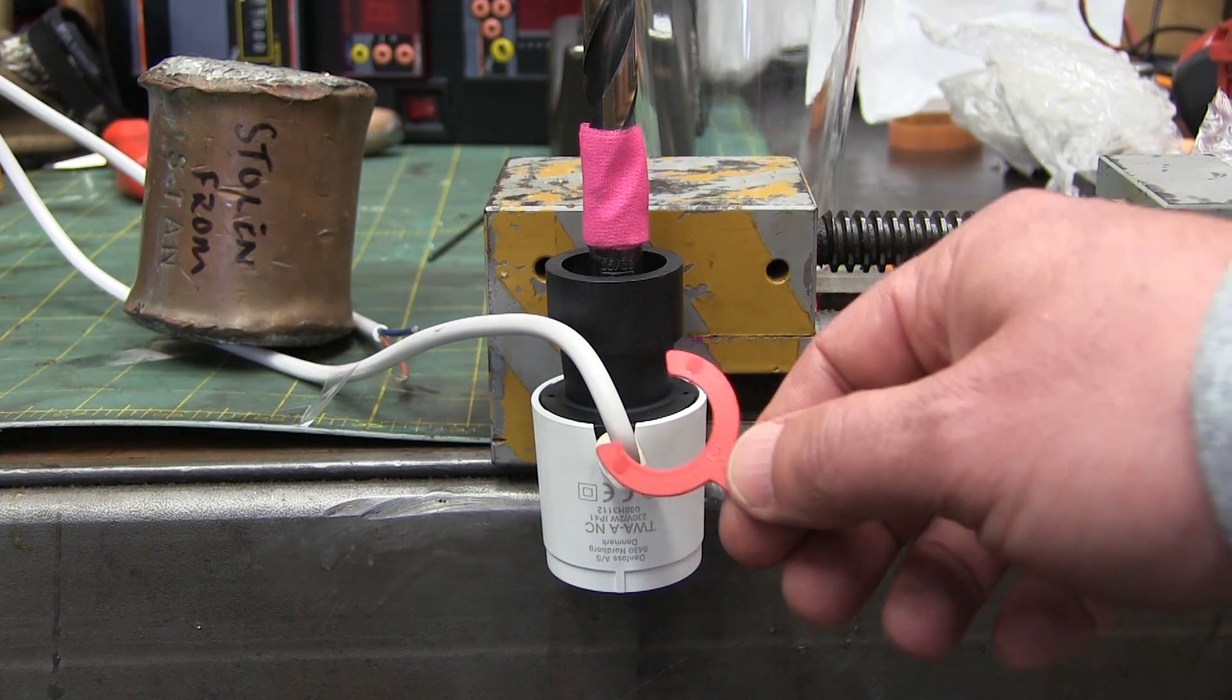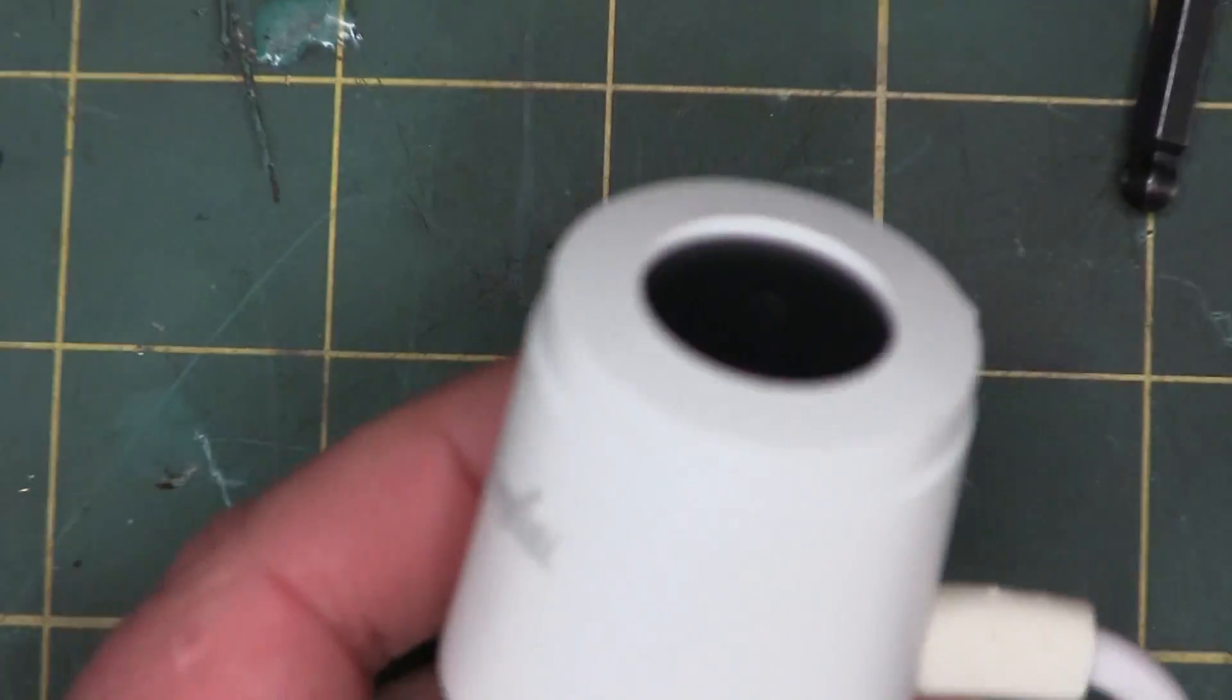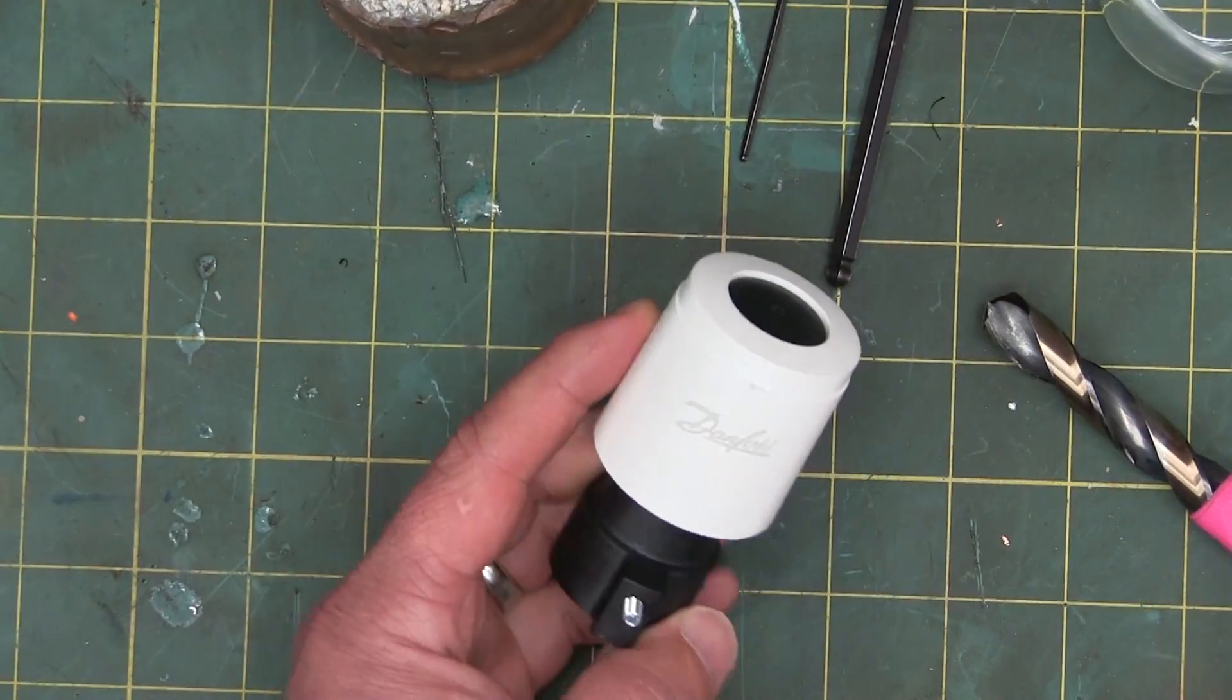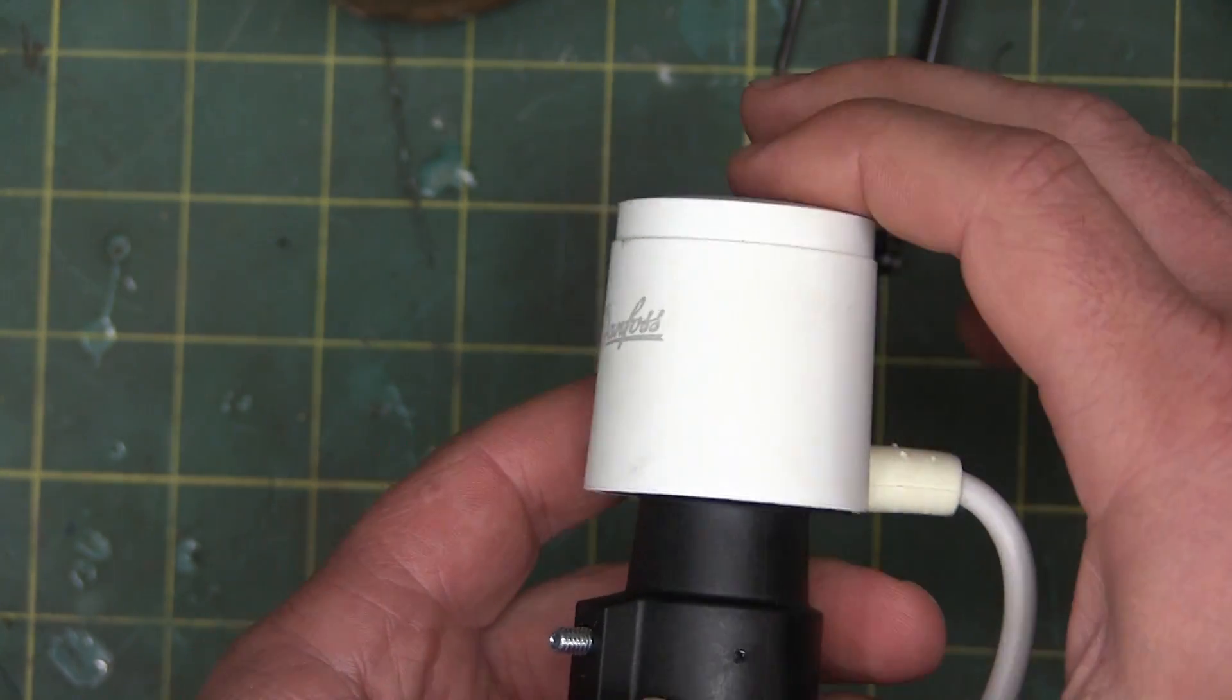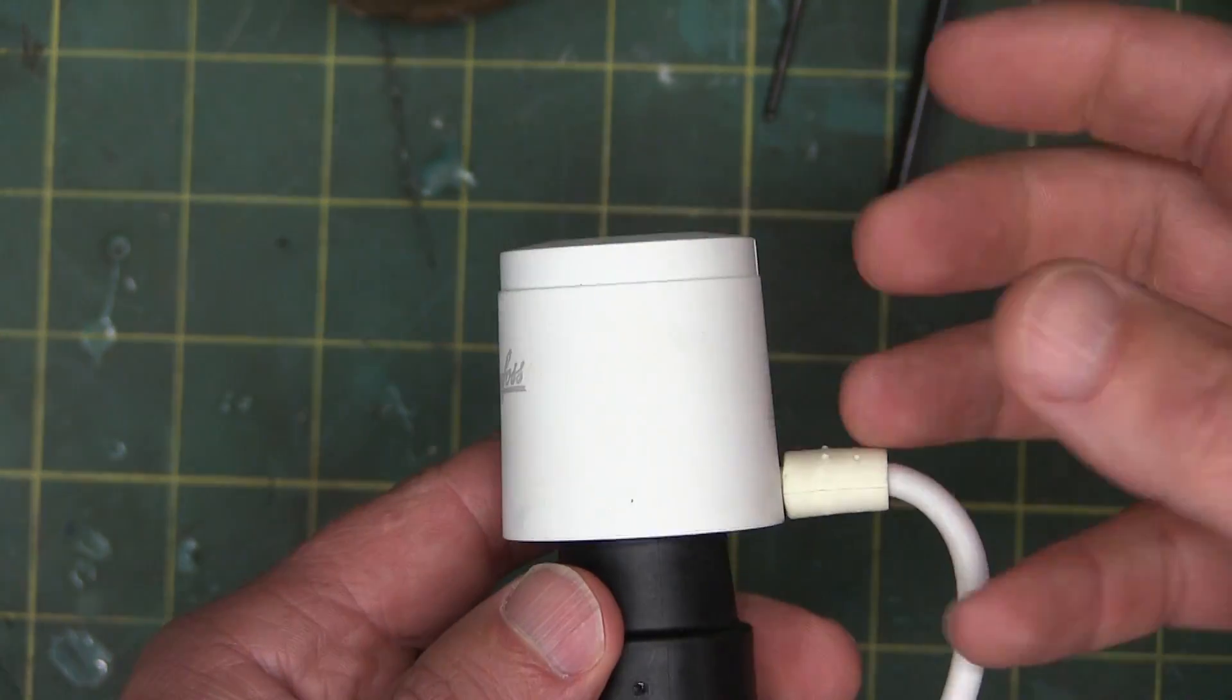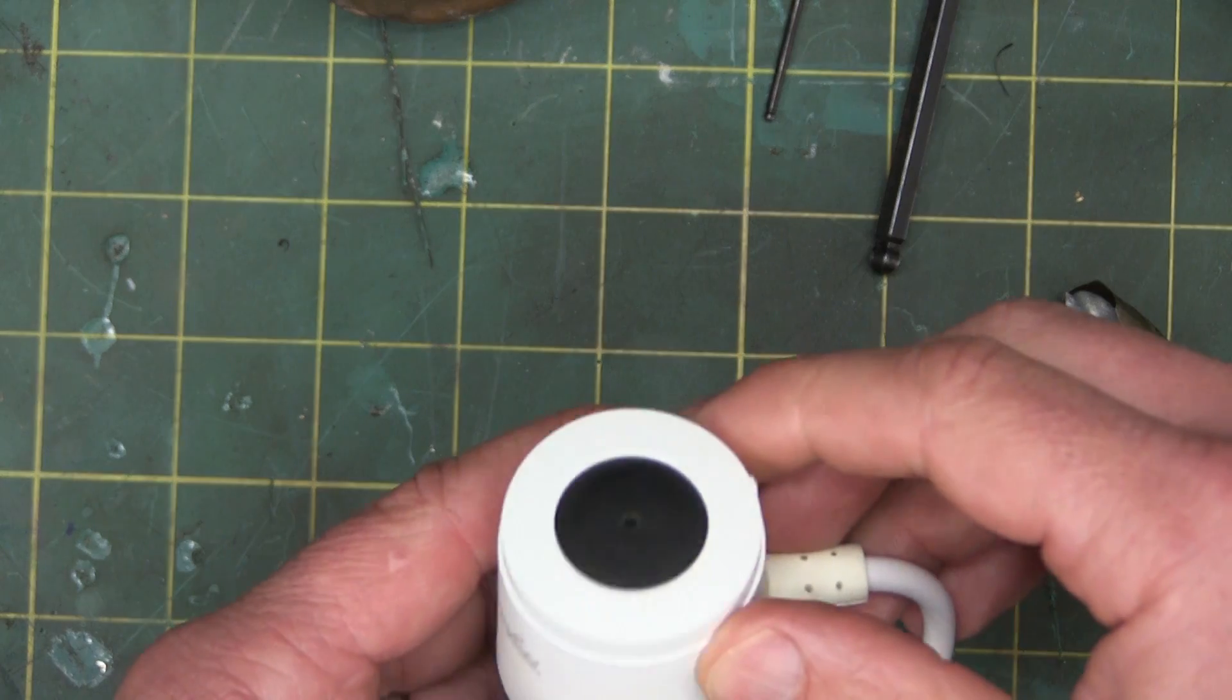I trust we can all agree to never speak of this again. All right, that's the normal position. That is the retracted position, this is a normally closed position, and then when we energize it, heats up the paraffin, changes phase, it goes from solid to liquid, expands, that puts out a hell of a lot of force and this little teat pops out.